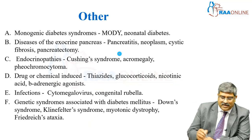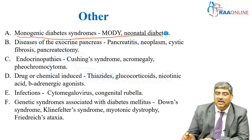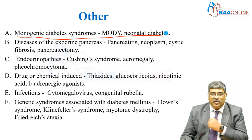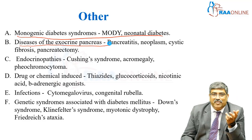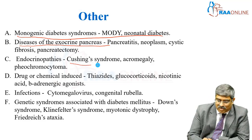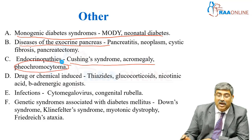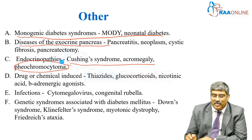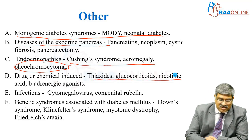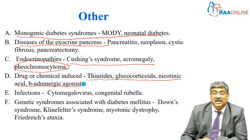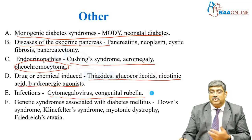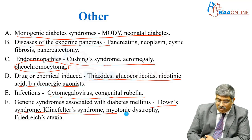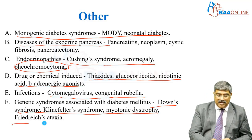Coming to secondary diabetes, it can be monogenic diabetic syndrome like maturity onset diabetes in the young or neonatal diabetes; disease of the exocrine pancreas like pancreatitis, neoplasm, or cystic fibrosis; surgical removal of the pancreas; endocrinopathy such as Cushing syndrome, acromegaly, or pheochromocytoma; drug-induced or chemical diabetes including thiazide diuretics, steroids, nicotinic acid, and beta-adrenergic agonists; infections like cytomegalovirus and congenital rubella; and genetic syndromes like Down syndrome, Klinefelter syndrome, myotonic dystrophy, and Friedreich's ataxia.